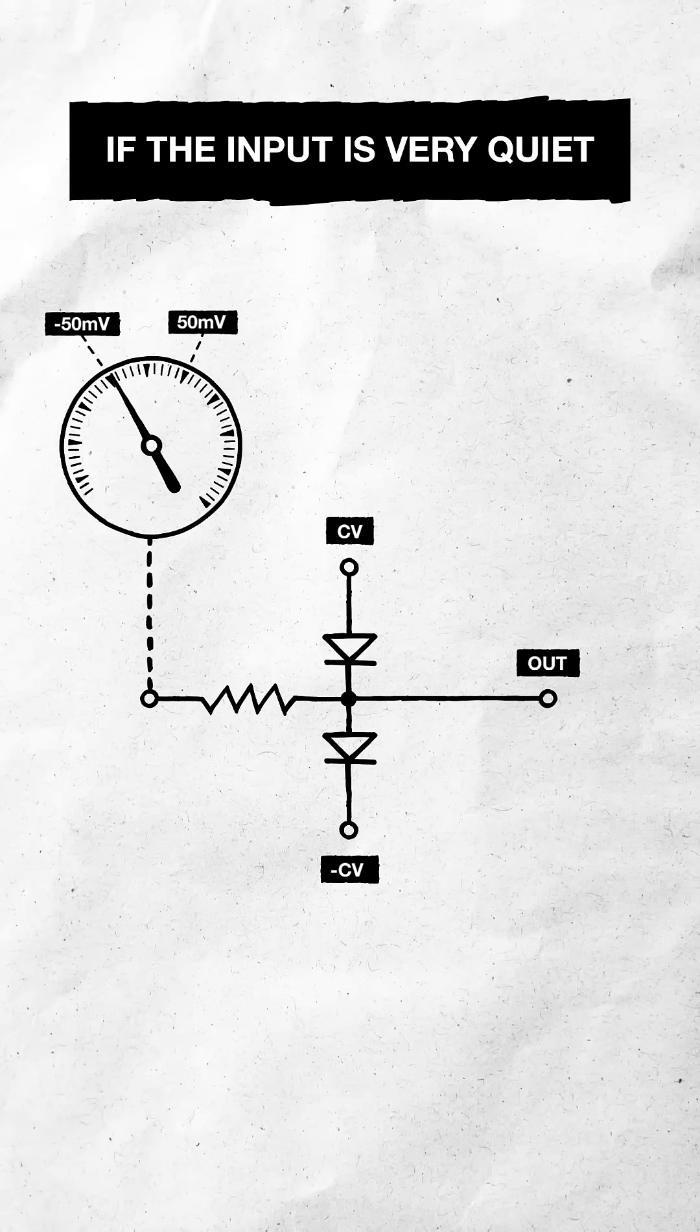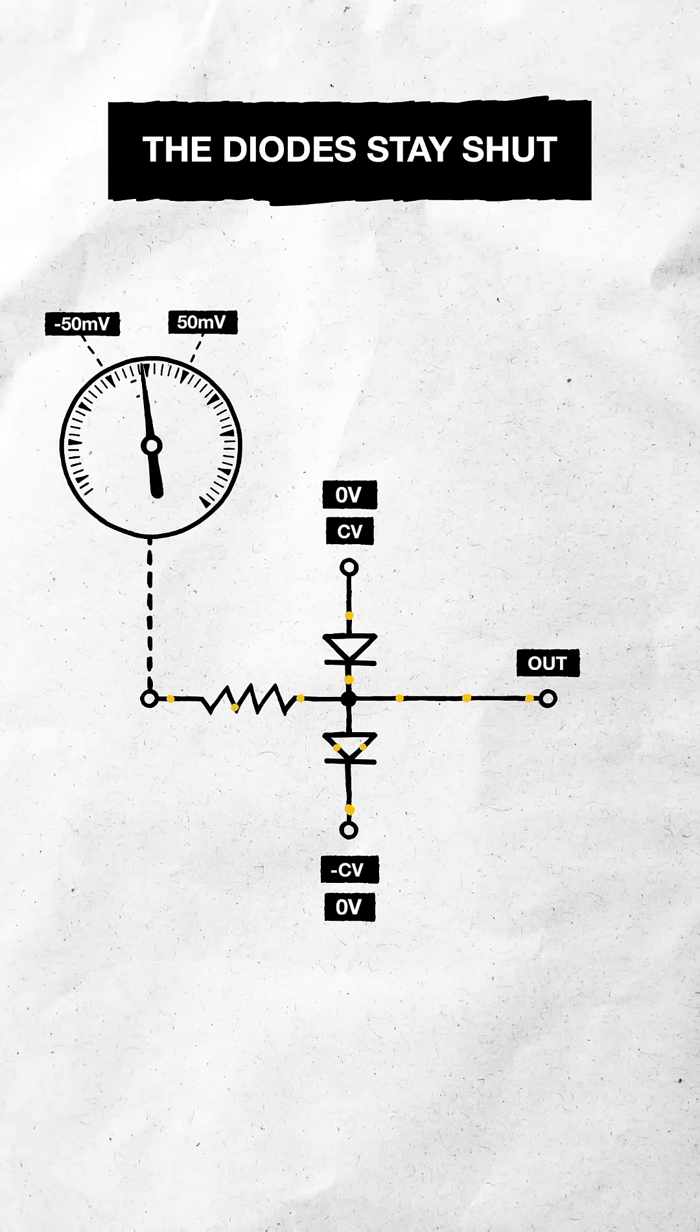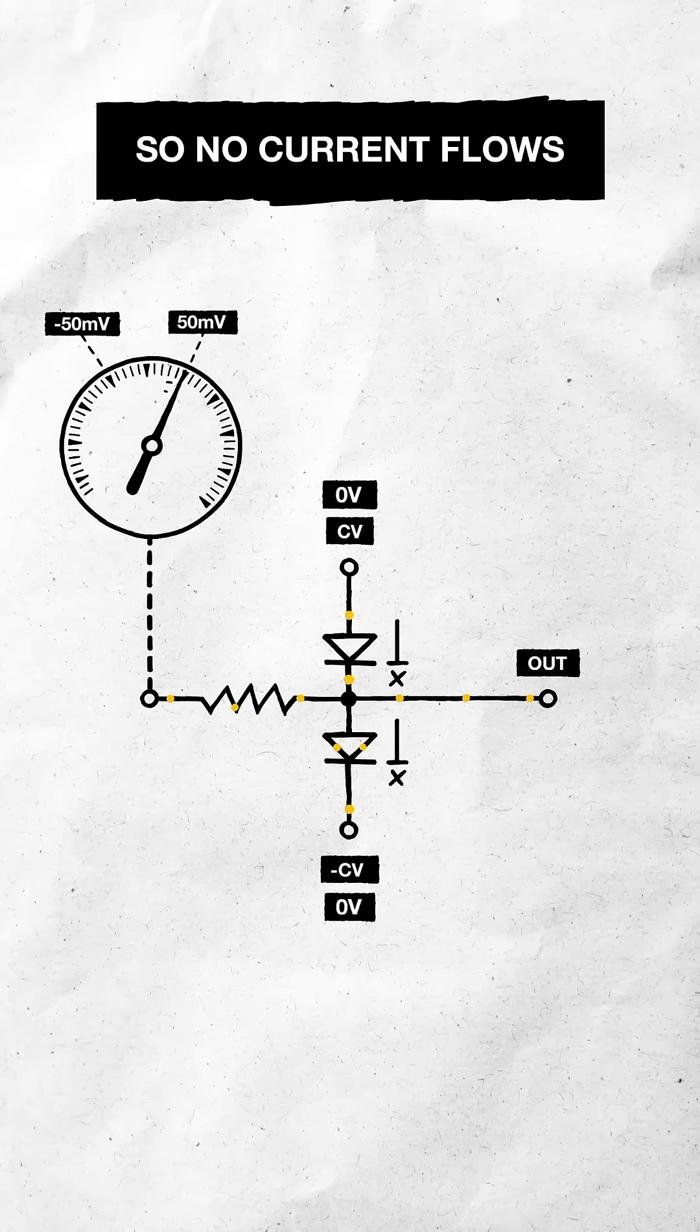If the input is very quiet and the control voltages are zero, the diode stays shut, so no current flows.